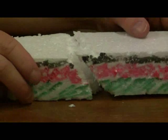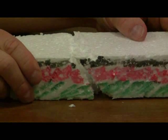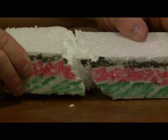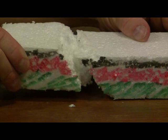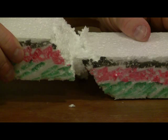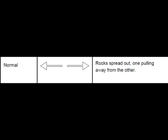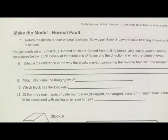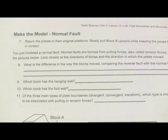Now you're going to make a model of a normal fault. Return the styrofoam pieces to their original positions. Slowly pull block B upward while keeping the joined faces in contact. This is a normal fault. Normal faults are formed from pulling forces, also called tension forces. Study this picture and look closely at the directions of the forces and the direction in which the plates moved. Go to your student guide and answer the questions.